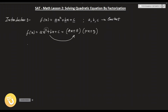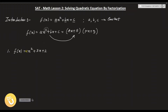Now let's talk about a few examples. Example number one: f(x) is equal to x squared plus 3x plus 2. We will try to understand how to factorize this function. Here the coefficients are: plus 1 for x squared, plus 3 for x, and plus 2 as the constant — the coefficient associated with x to the power 0.